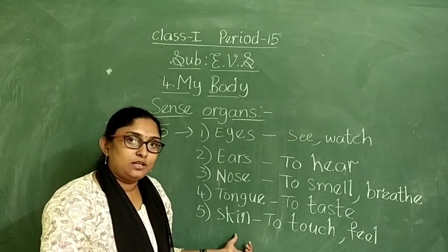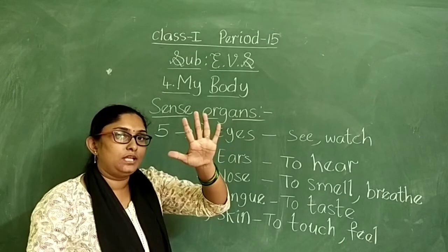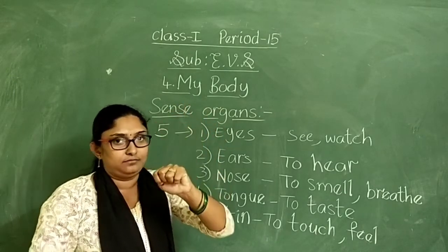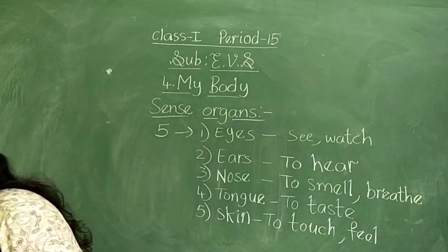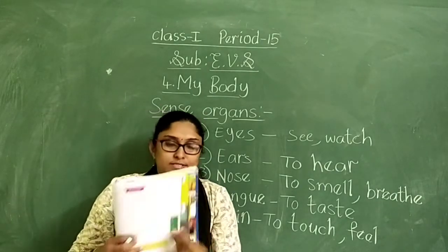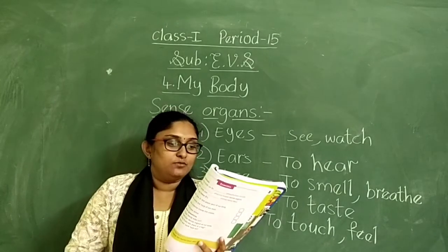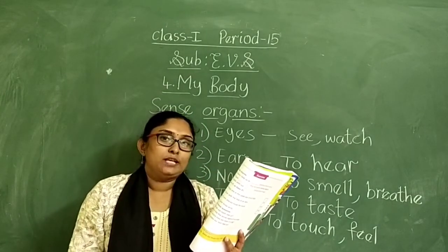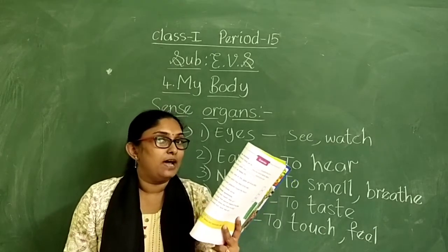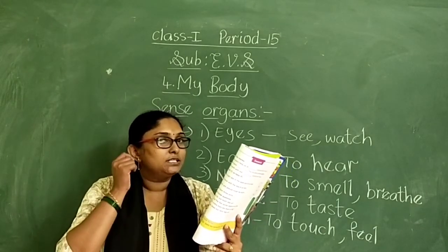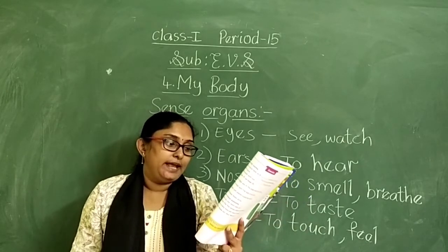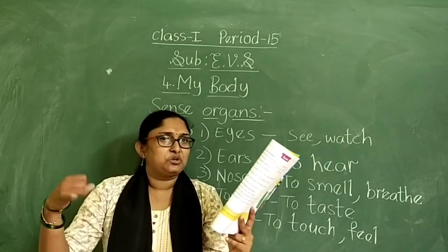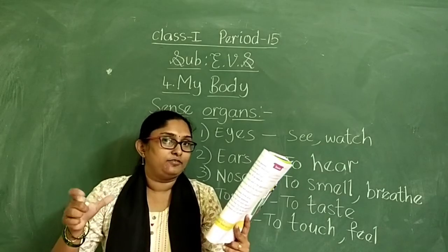How many sense organs do we have, children? Five. What are they? Eyes, ears, nose, tongue, skin. We see everything around us with our eyes. Our nose helps us to smell food and flowers. We hear sound with our ears. Our skin helps us to feel things — heat, cold, soft, smooth, or rough things.